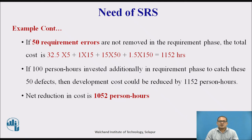The key lesson is that we need to find defects as early as possible and spend more effort in the initial phase. Otherwise, if 50 requirement errors are not removed, the cost will be 1152 person-hours, because requirement defects fixed at later stages cost significantly more.